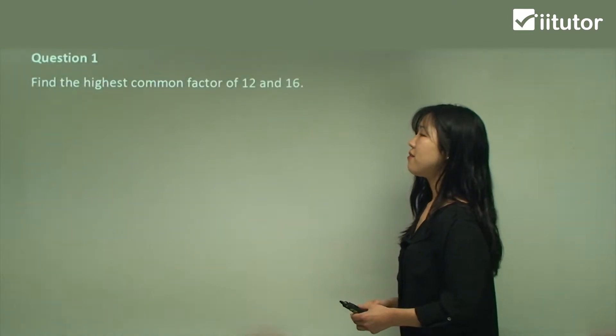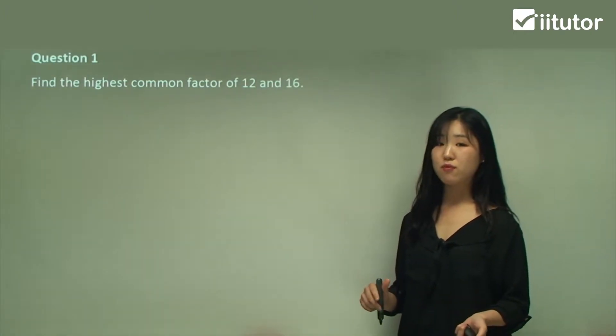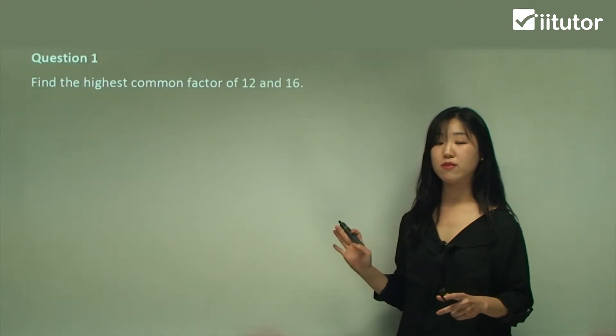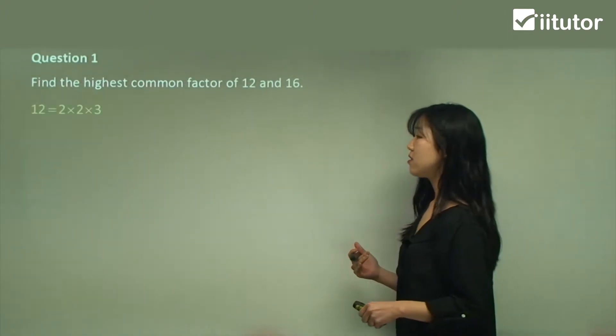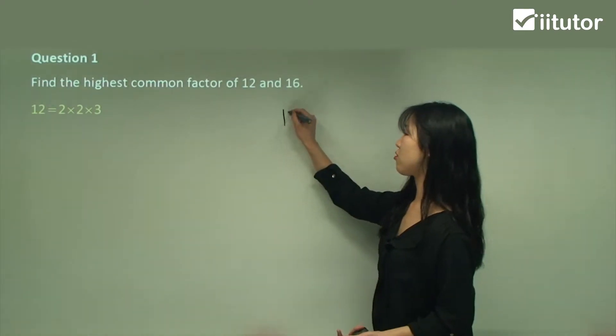Question 1: Find the highest common factor of 12 and 16. I'm going to do the exact same thing. I'm going to first find the prime factors of these individual ones. For 12, I know it's 2 times 2 times 3. Again, you can just use the tree.